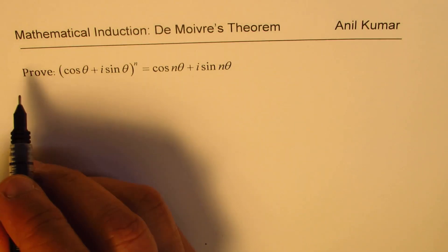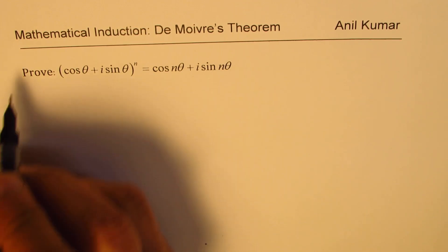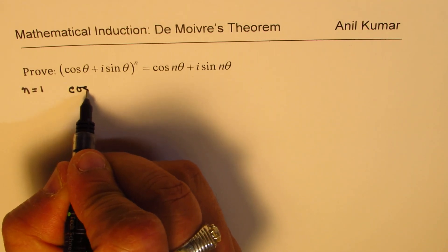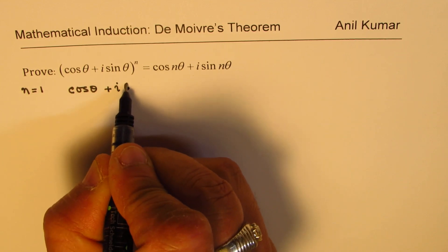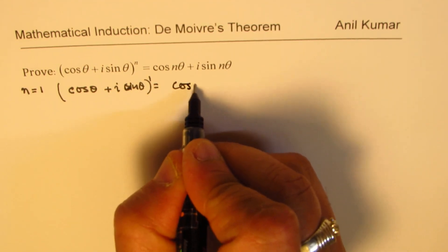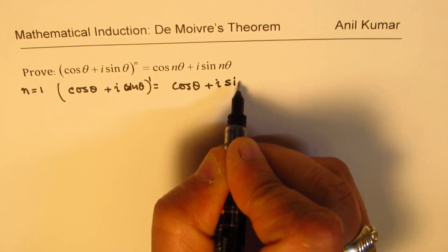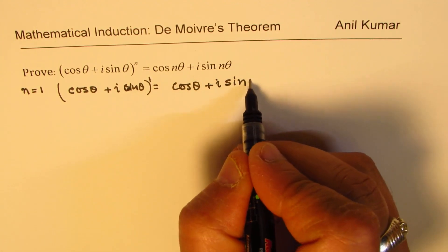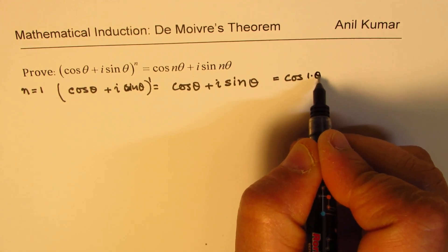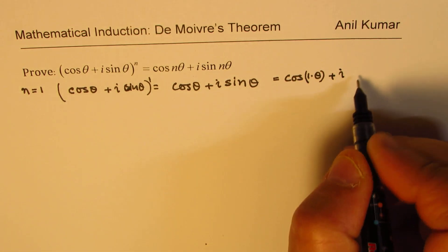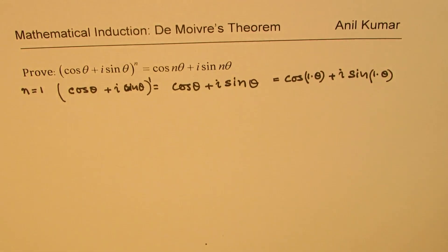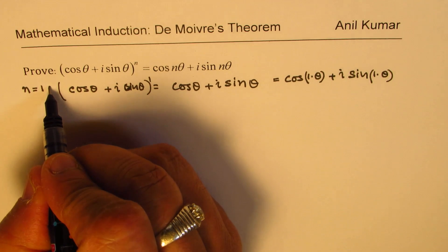To use the method of induction, we first need to check what happens when n = 1. If n = 1, then we get (cos θ + i sin θ)^1, which is clearly equal to cos(1·θ) + i sin(1·θ), as shown here. So the formula works for n = 1.